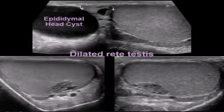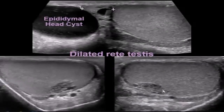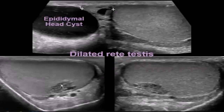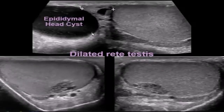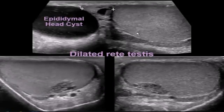This patient had dilated rete testis. You can see this irregularly shaped clump of cystic areas — dilated tubules at the mediastinum of the testis. This is most commonly seen in older patients and is very commonly associated with an epididymal head cyst, thought to occur as a result of obstruction in the epididymis leading to backup into the testicle with dilatation of the rete testis.